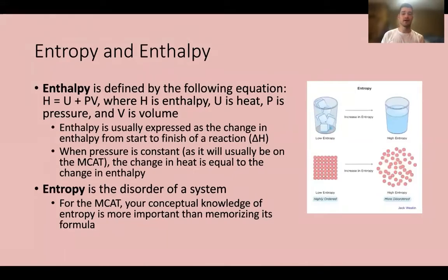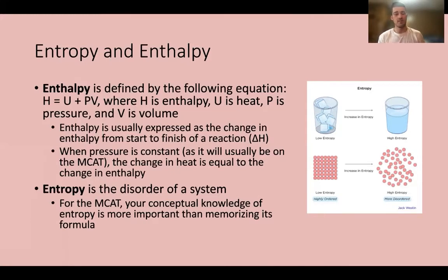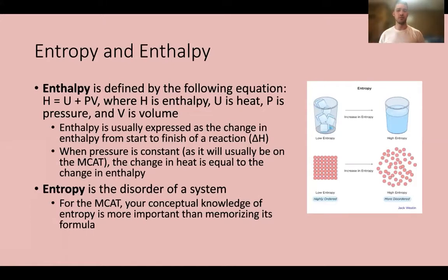Enthalpy is defined by the equation H equals U plus P times V, where H is enthalpy, U is heat, P is pressure, and V is volume. Enthalpy is usually expressed as a change: delta H equals delta U plus PV. On the MCAT, you won't really be calculating enthalpy directly — it's more about using a given enthalpy to calculate Gibbs free energy.